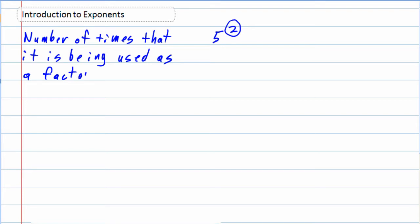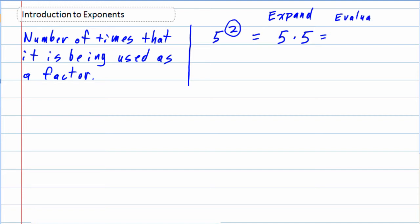When we think back to factor, we're talking about multiplication. So this 2 is telling us the number of times that the 5 is being used as a factor. So that 5 is being used twice as a factor — 5 times 5, that's what that 2 is telling us. So if our instructions were to expand, we've taken 5 squared and written it as 5 times 5. Usually we're looking to evaluate, which means 5 times 5, we actually multiply those and get 25.